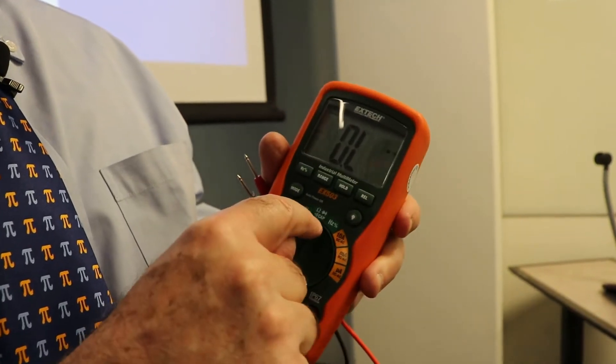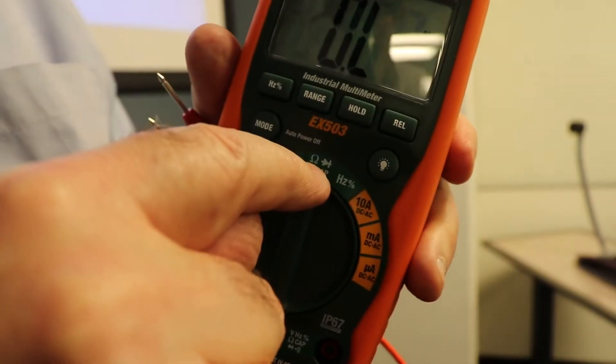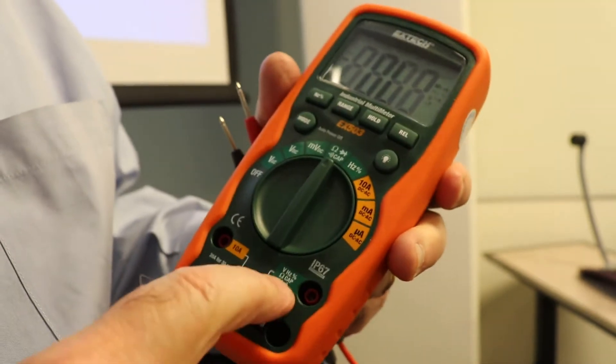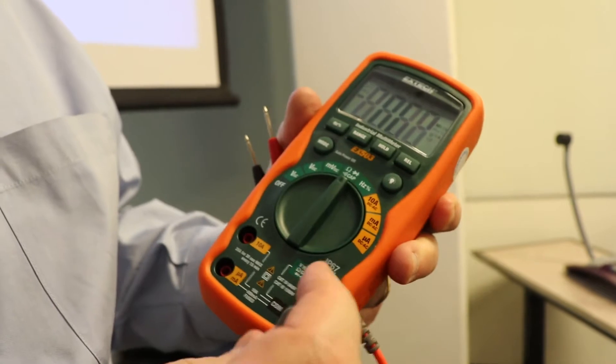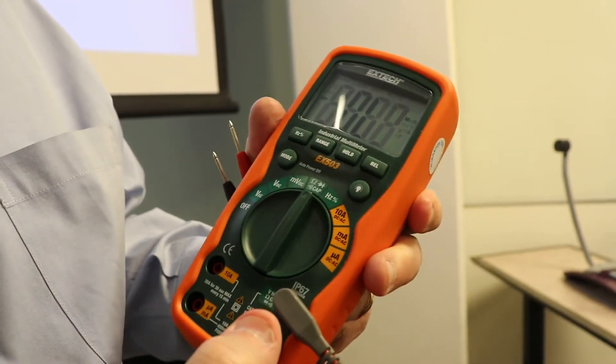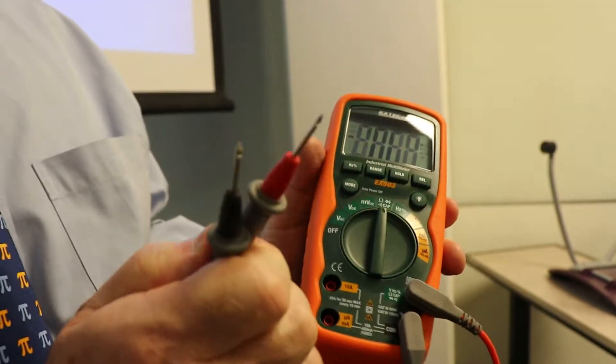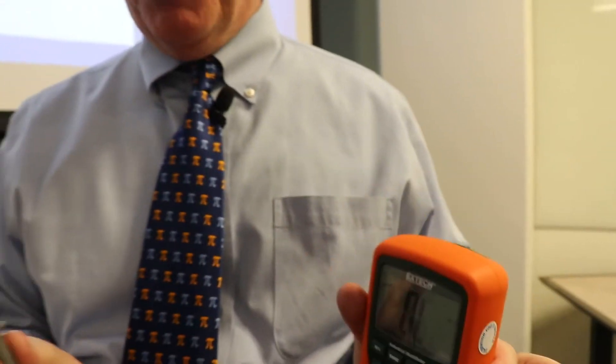If I want to measure resistance, I put it on that omega symbol right there. I plug in the red here, and the black always goes in the common down here.